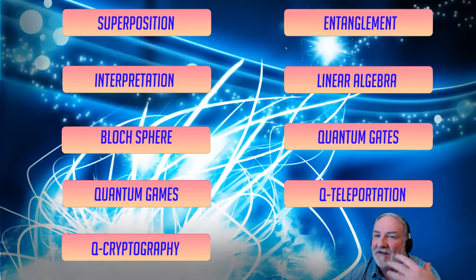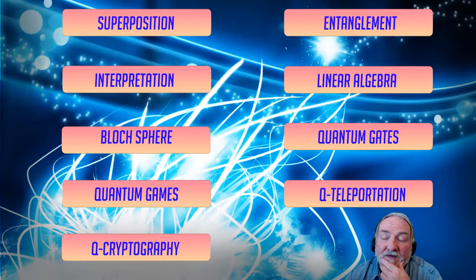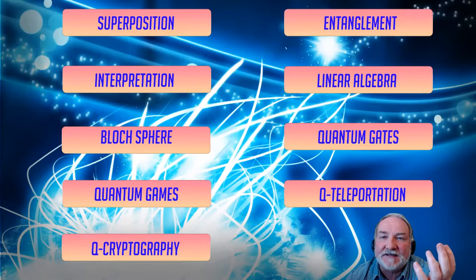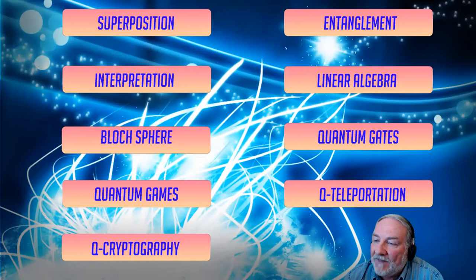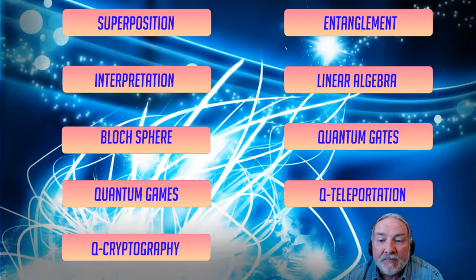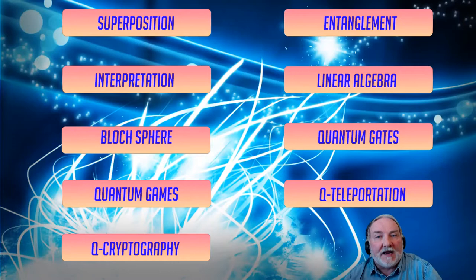Here are those nine lessons. So we've been through superposition and entanglement, which are amazing properties, forces of the quantum realm. We have the interpretations, including the many worlds theory that every time there's a collapse, a new world appears. We went through the basics of linear algebra, basically matrix multiplication.